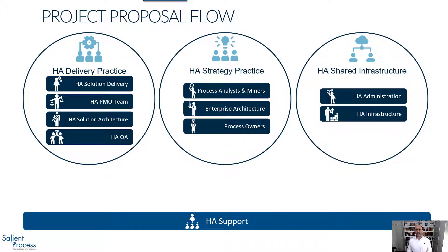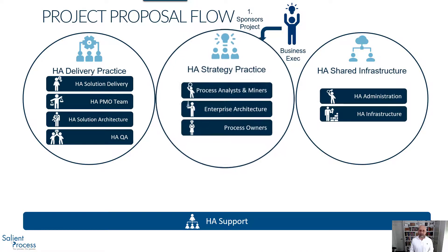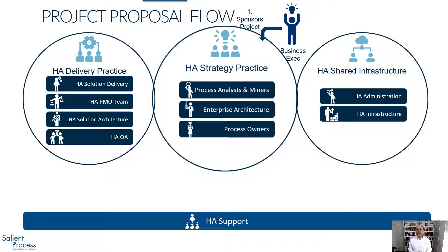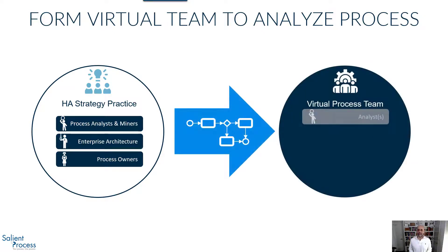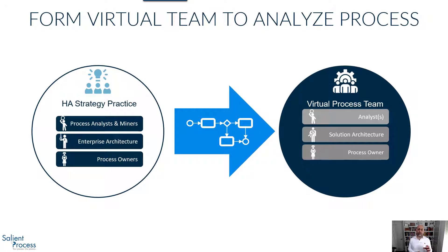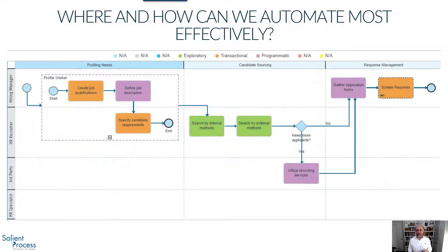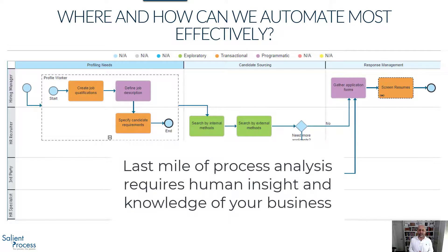Now let's get back to our overall hyperautomation governance and look at how a project would flow through. A business exec would sponsor a project. The hyperautomation strategy practice would evaluate it and ask whether it fits within the overarching hyperautomation delivery practice. The first thing they do is form a virtual process team to take a look at that process. That team would consist of one or more analysts from the strategy team, the solution architect who understands how the different technologies can help the company become more effective and efficient, the process owner, and subject matter experts for each swim lane in the process. They get the process documented at a high level — achieved by either process mining or manual process modeling, or more likely both. Process mining can get you some of the data you'll need, but the last mile of process analysis still requires human insight and knowledge of your business.